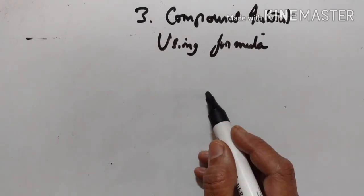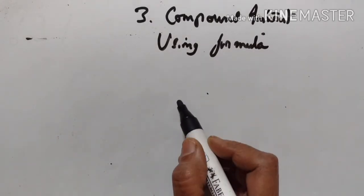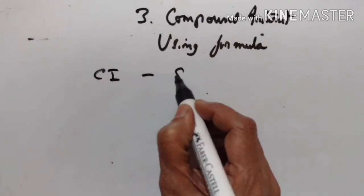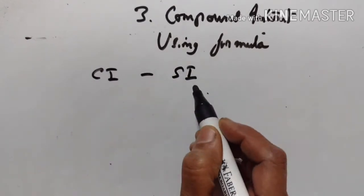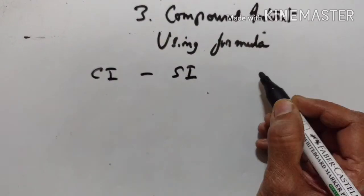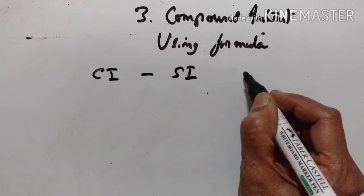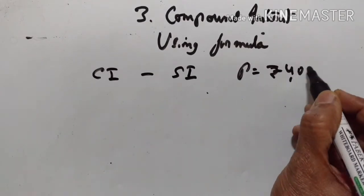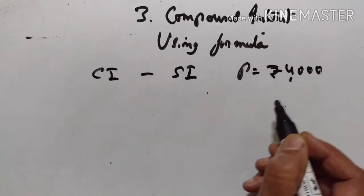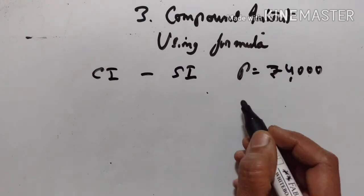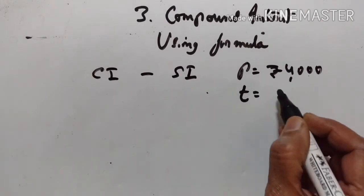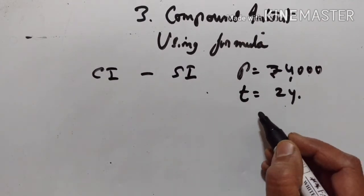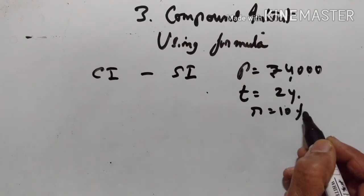Find the difference between simple interest and compound interest on rupees 4000 for 2 years at 10% per annum. Principal is equal to rupees 4000, time is equal to 2 years, rate is equal to 10%.